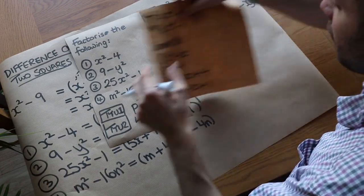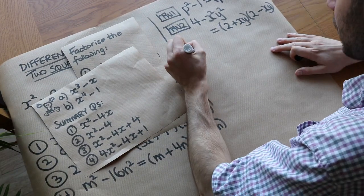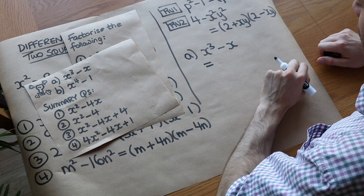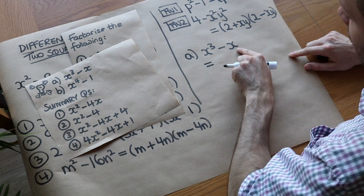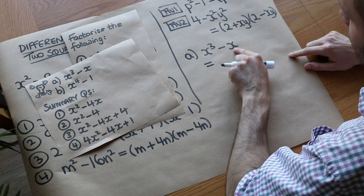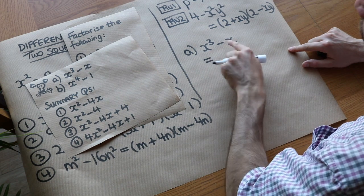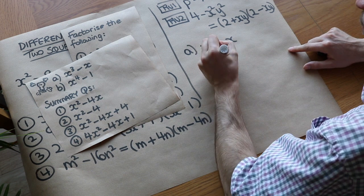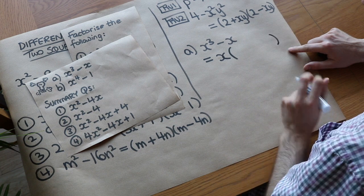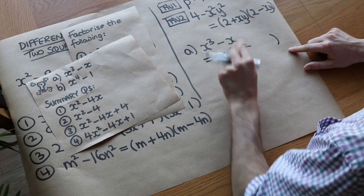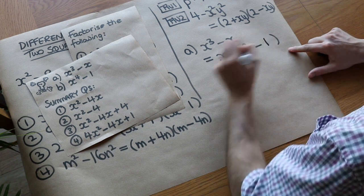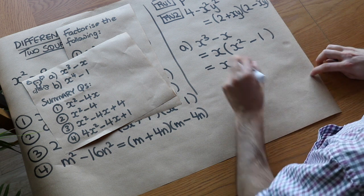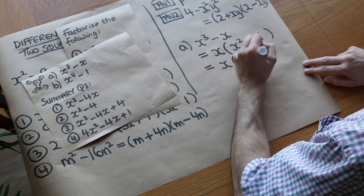Now the killer questions. x cubed minus x: this is not the difference of two squares directly, because x cubed is not a squared thing. However, both terms share a common factor of x. Factorising out x gives x(x squared minus 1). Now the bracket x squared minus 1 is the difference of two squares — x squared is something squared, and 1 is a square number — giving x(x + 1)(x − 1).